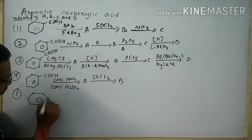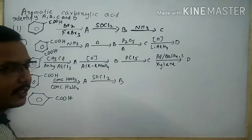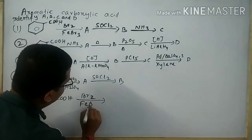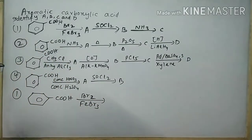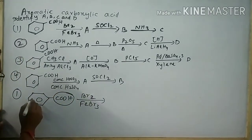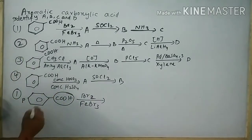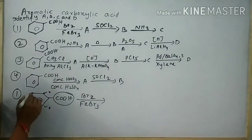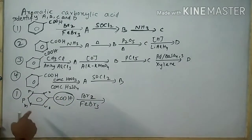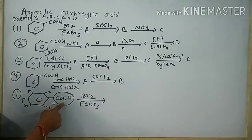This is your benzoic acid. It is subjected to reaction with Br2 in the presence of FeBr3. This is said to be halogenization. The COOH group is a meta-directing group. This position is said to be para-position, these two positions are ortho, and the remaining two positions are meta-position. Since it is a meta-directing group, one bromine atom will attach at the meta-position of the carboxylic group.